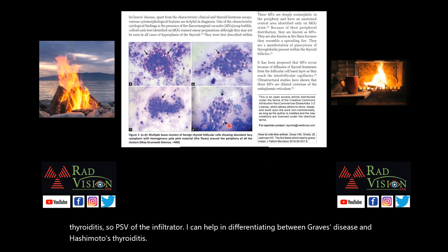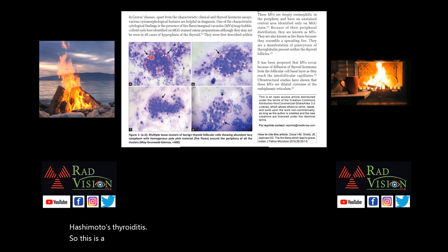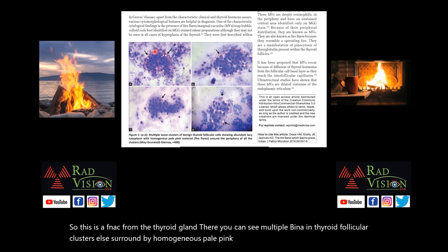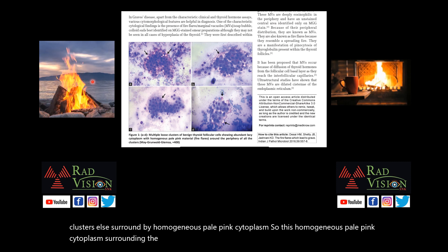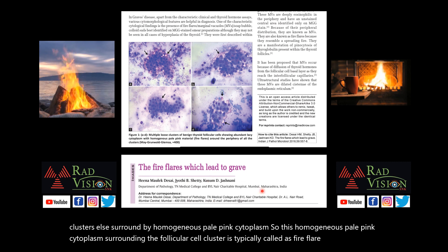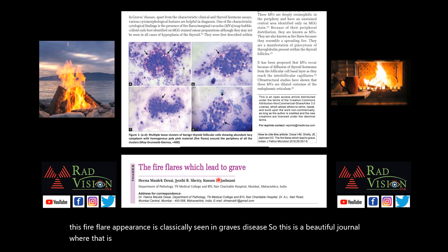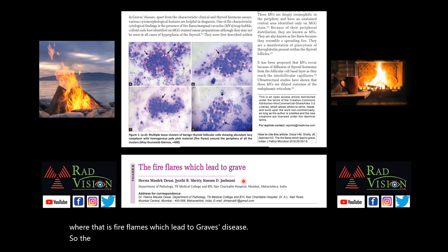This is an FNAC from the thyroid gland showing multiple benign thyroid follicular cluster cells surrounded by homogeneous pale pink cytoplasm. This homogeneous pale pink cytoplasm surrounding the follicular cell cluster is called the fire flare appearance, which is classically seen in Graves disease. Remember: fire flare appearance on FNAC is seen in Graves disease.